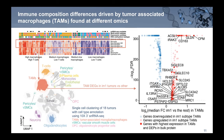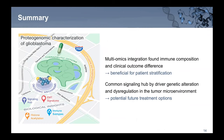To summarize: using multiomic integration, we found different immune compositions and clinical outcome differences that can benefit patient stratification. We also identified a common signaling hub — PTPN11 — downstream of different driver RTK alterations including EGFR and PDGFRA, which share this same signaling hub. We also found dysregulations in the tumor microenvironment that could be potential future treatment options.